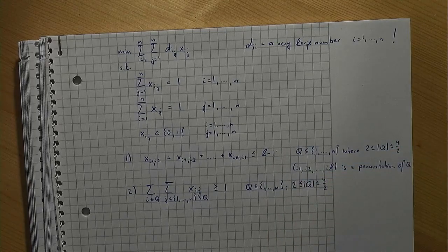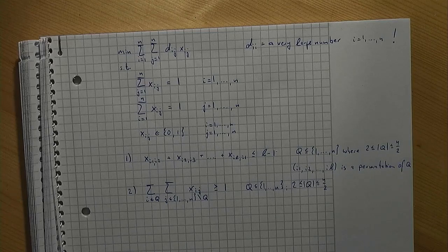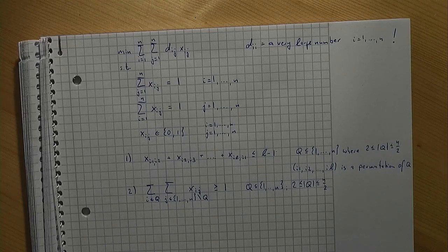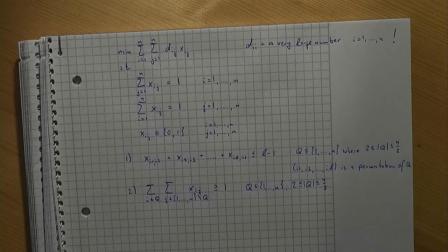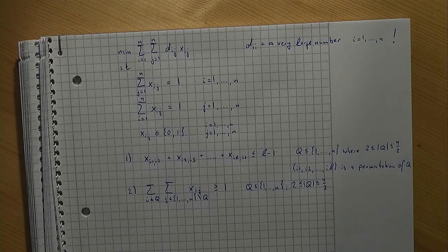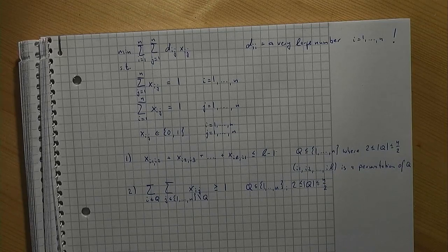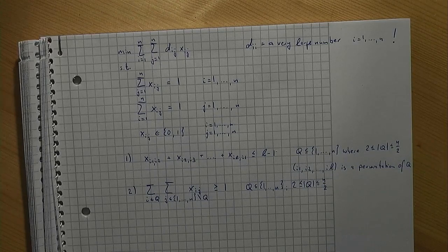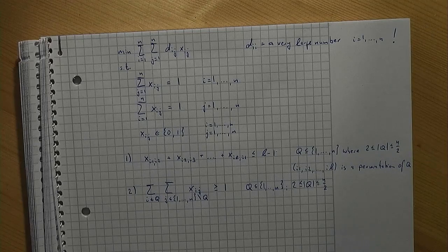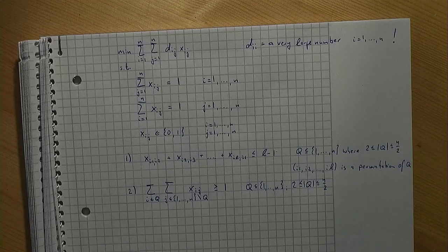In this formulation, q denotes the subset of locations on one side of a possible line. As before, it is sufficient to consider subsets of sizes from 2 to n over 2. This formulation to avoid short cycles is known as a Dantzig-Fulkerson-Johnson formulation to give credit to the authors who published this idea. And finally, let's study one more alternative to avoid short cycles.